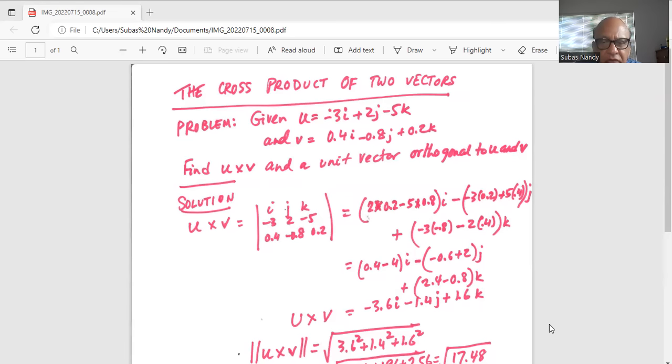So it will be minus 3 times minus 0.8, there will be one minus only, minus 2 times 0.4. Because we eliminated the first row and the third column.